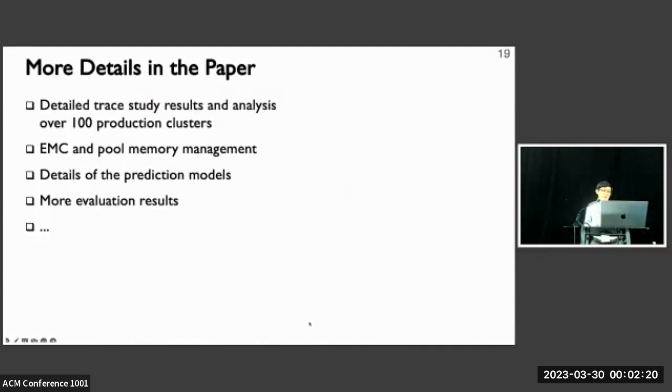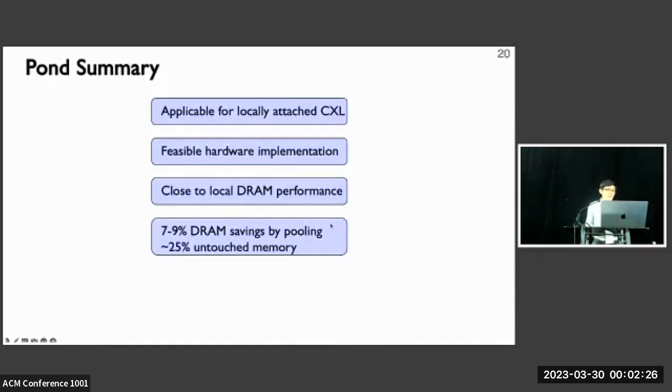Due to time constraints, there are more details I cannot cover here. Feel free to read our paper. In summary, Pond is a software hardware co-designed memory pooling system design that builds on top of directly attached CXL with a feasible hardware implementation. Pond can help us achieve close to NUMA local DRAM performance and save 7% to 9% of DRAM savings by putting about 25% of untouched memory using CXL memory pool. We also open source the Pond CXL emulation tool. Feel free to try it out. With that, I will conclude this talk. Thank you so much for your attention and I'm happy to take questions.